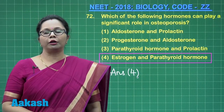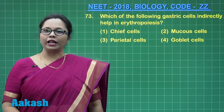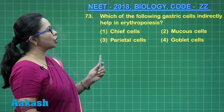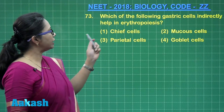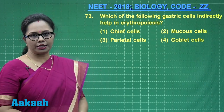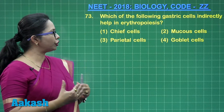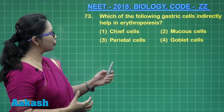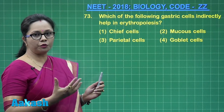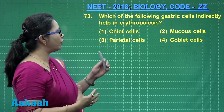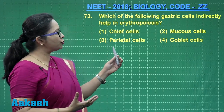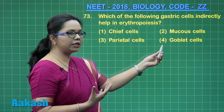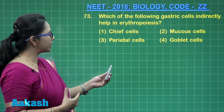Let us go on to question 73: which of the following cells of gastric mucosa indirectly helps in erythropoiesis? Erythropoiesis is the formation of RBCs. The chief cells are responsible for secretion of enzymes pepsinogen and prorenin. Mucus cells secrete mucus, and goblet cells are also mucus-secreting cells.